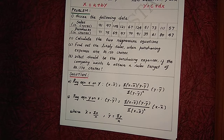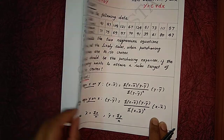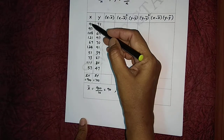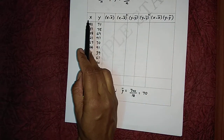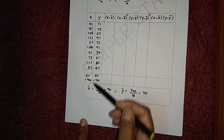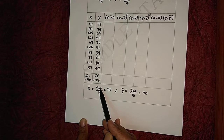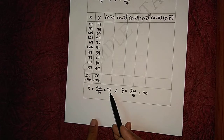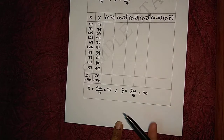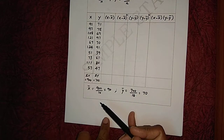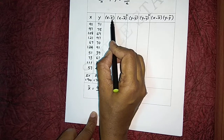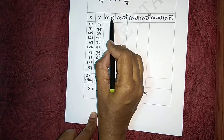The first step is to calculate x̄ and ȳ, for which we first write all the x values. Note that sales are denoted by the variable x and purchases by the variable y. Write all the y values and find their totals. x̄ = Σx/n, where n is the number of values, which is 10. Similarly, ȳ = Σy/n = 700/10 = 70. Using these two values, let's now proceed with the remaining calculations for x − x̄.